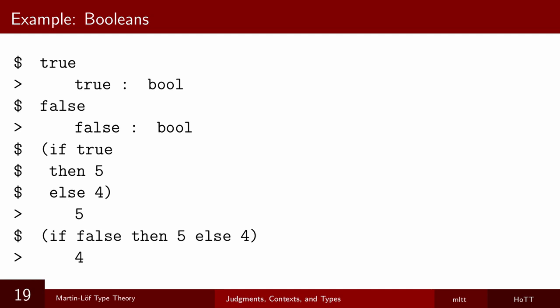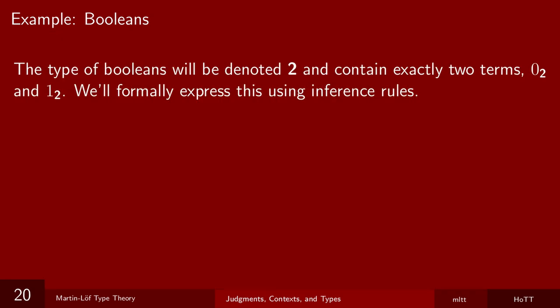We said that Martin-Löf type theory will mimic typed programming language in a lot of ways, and this is one of them. In MLTT, we'll also have a type of booleans, which we'll write with a blackboard two. But out of habit, I might still pronounce it bool. And it also has exactly two terms, which we'll write as 0 and 1. You can think of one of these as being true and the other as false. To assert the existence of this type formerly in MLTT, we'll use inference rules. And this will be our first example of a four-step methodology for introducing a new type.